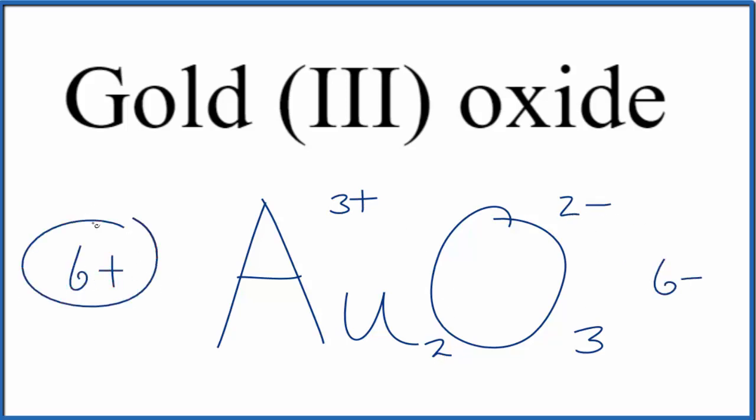These two numbers, they add up to zero. So that's the correct formula for Gold(III) oxide: Au₂O₃.